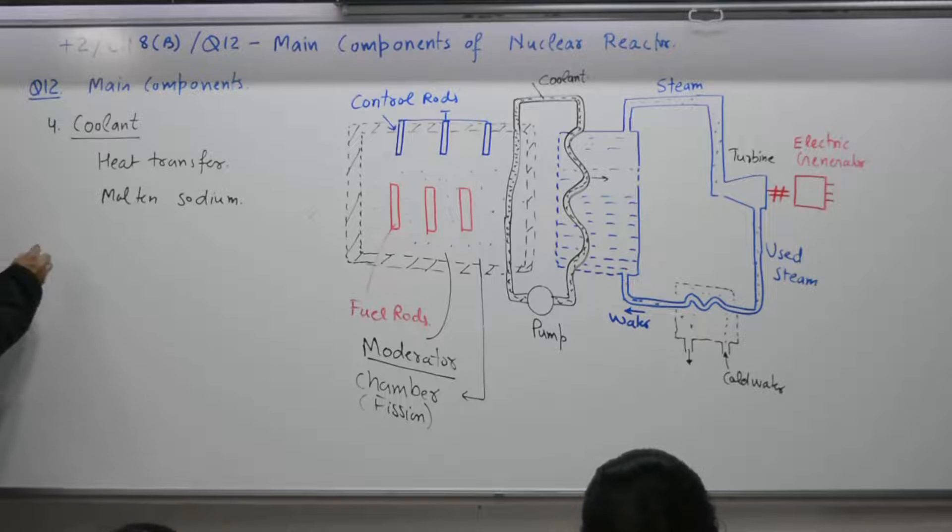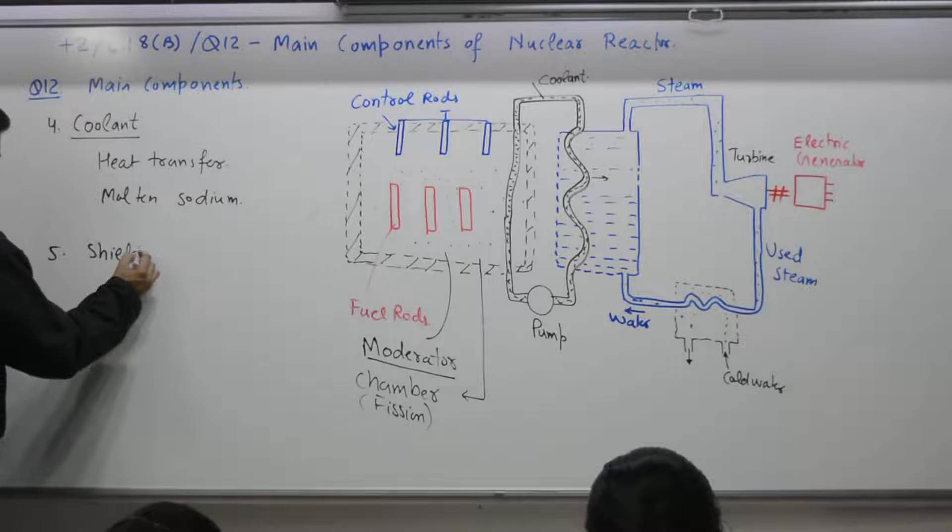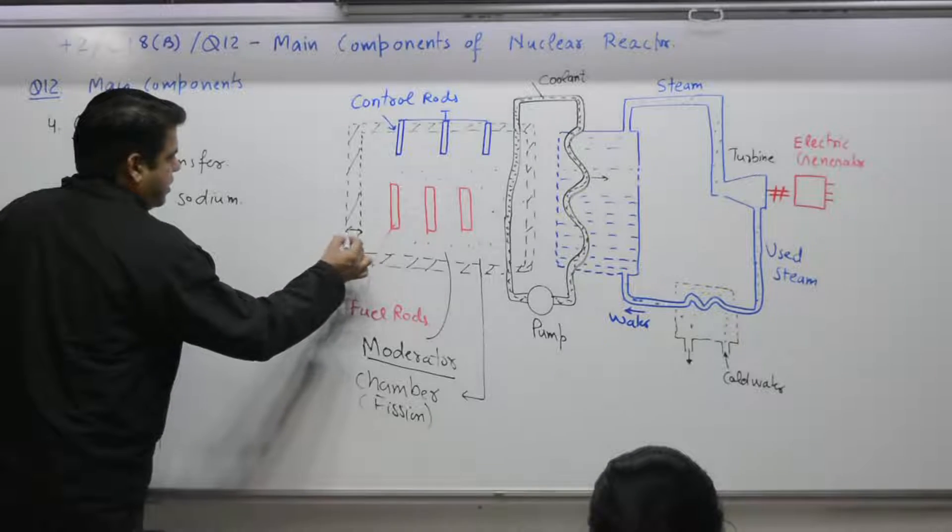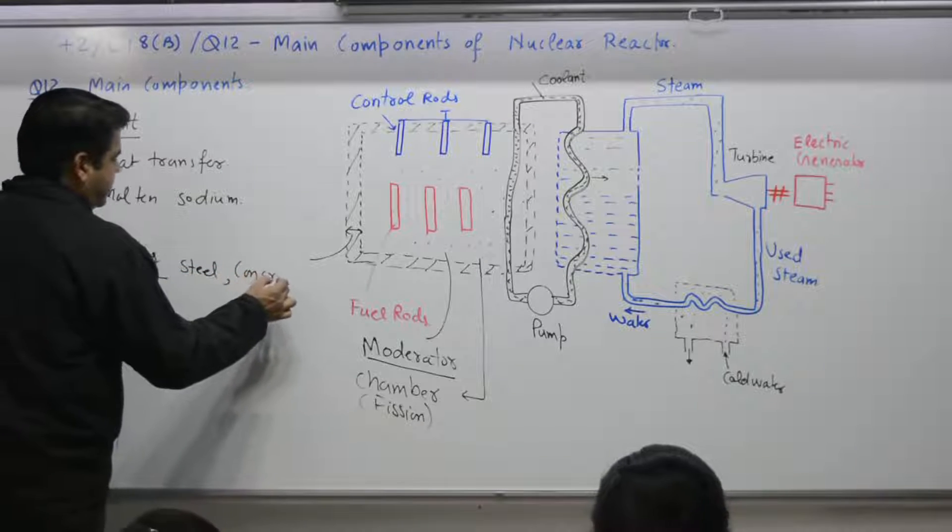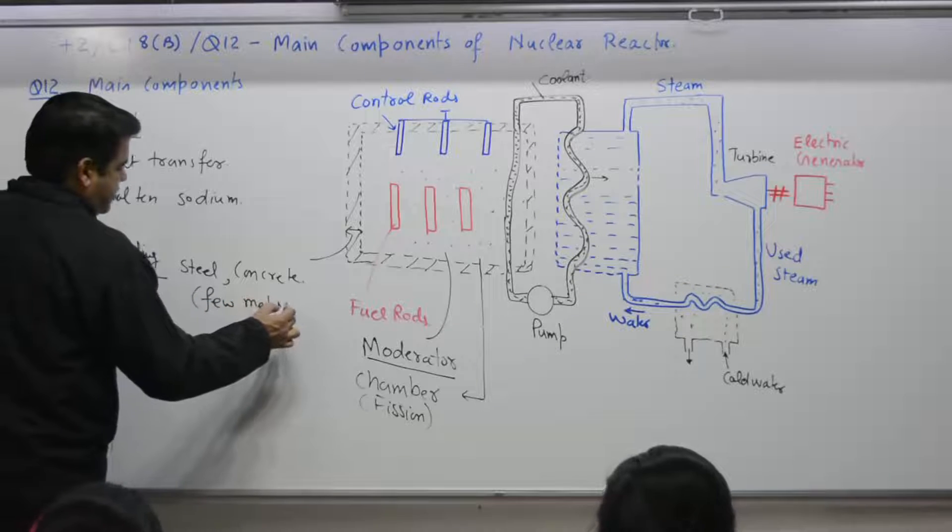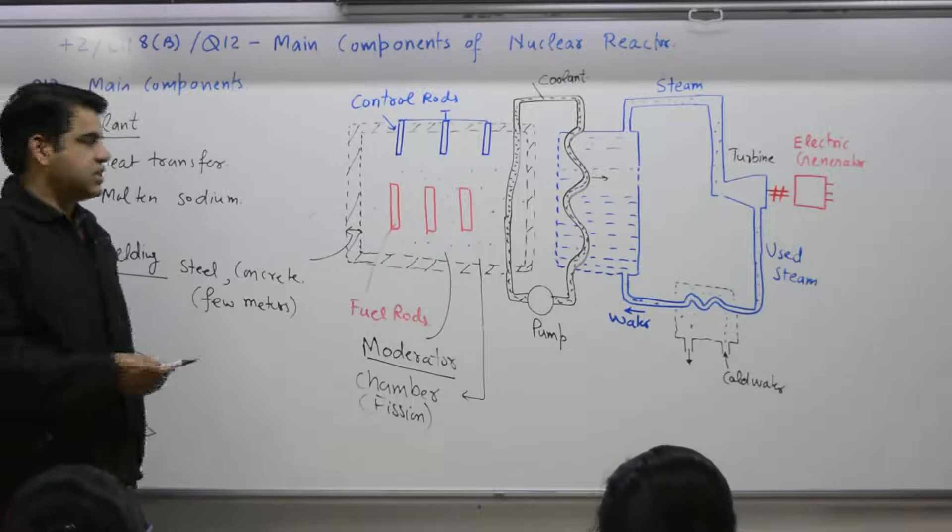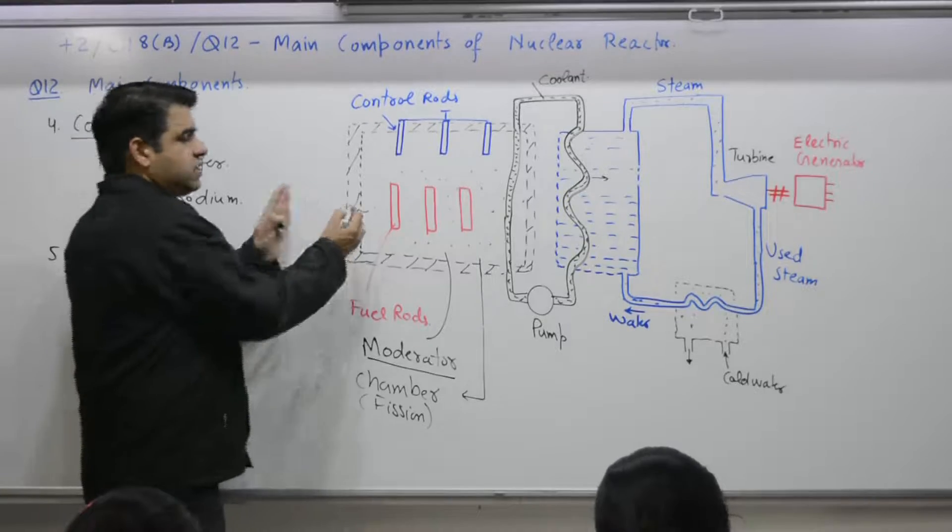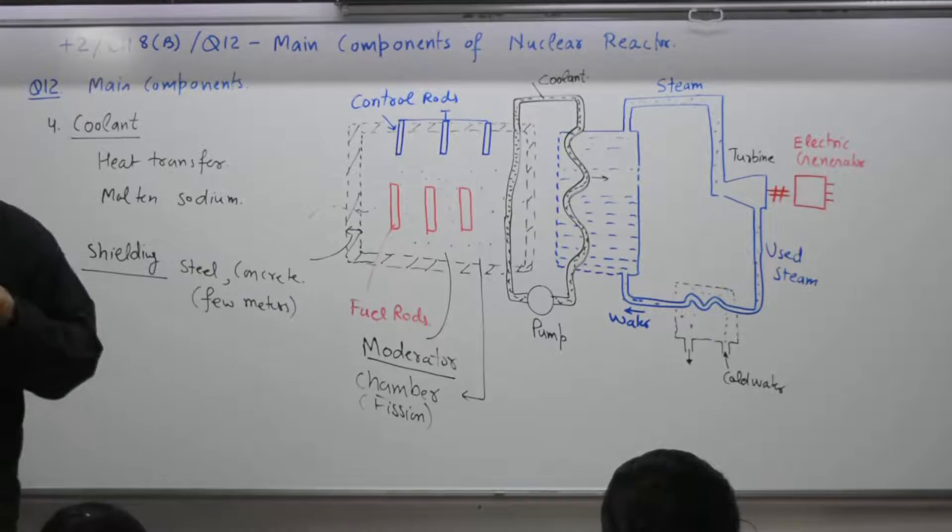Shielding also you can write as it is. Then two points shielding. This wall, steel, concrete, few meters. Why? So, that alpha, beta, gamma radiations cannot escape and may affect the surrounding. That is why thickness of this is of what order? Of the order of few meters. Two minutes with you to complete. Point number four and five.